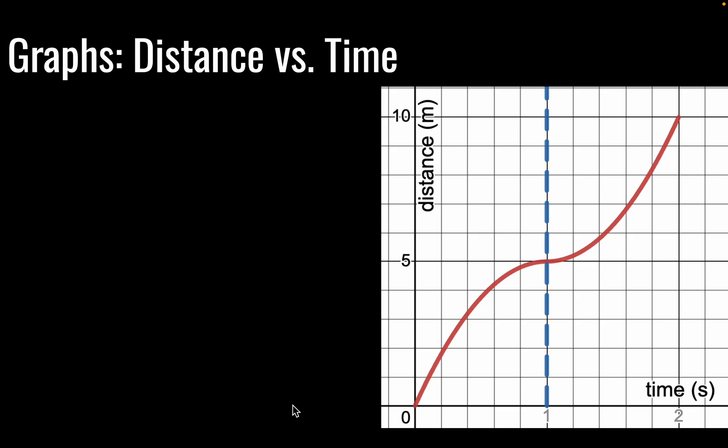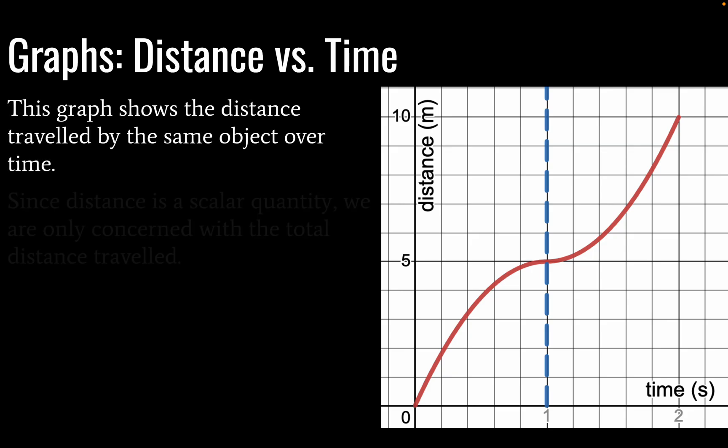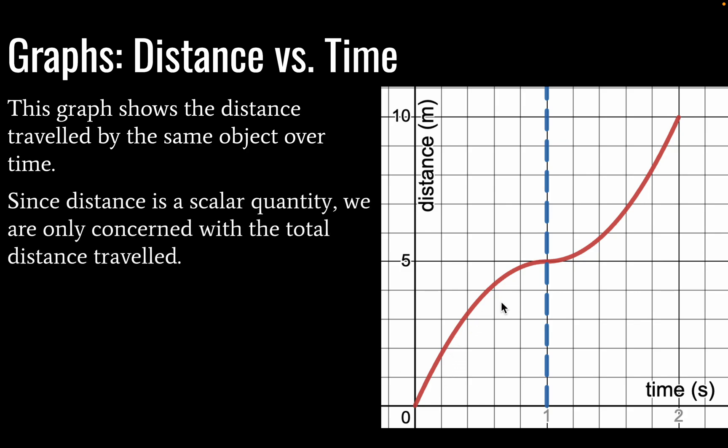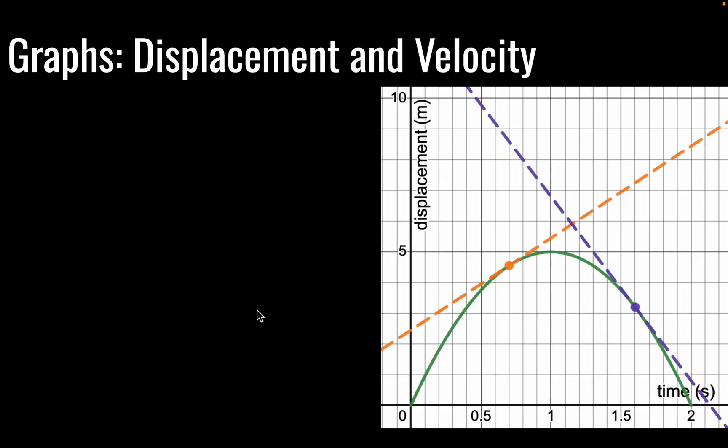Okay, here we have distance versus time for the same object. And here, we're only concerned with our total distance traveled. Okay, so total distance here is going to be 10 meters for this example. The direction of motion doesn't matter for distance versus time graph.